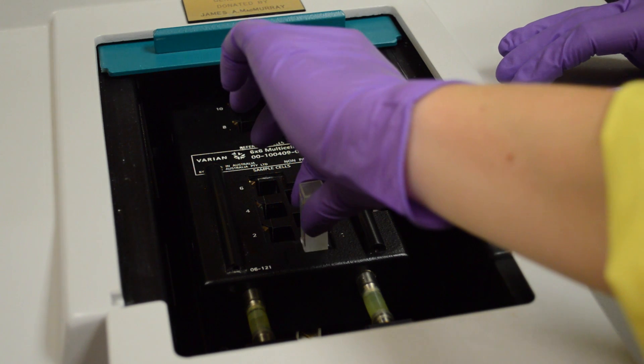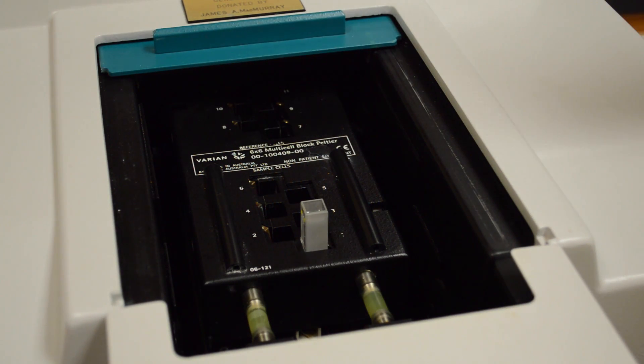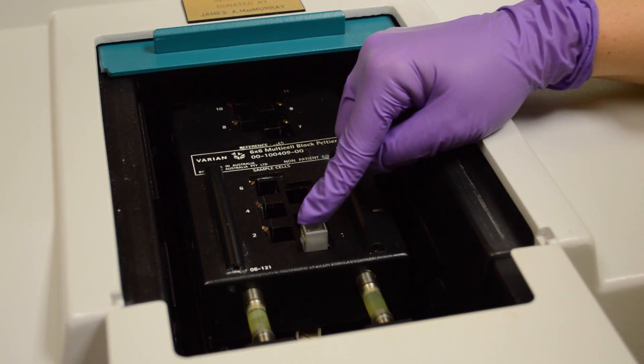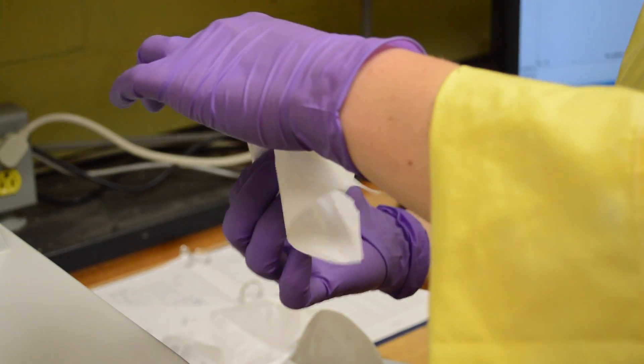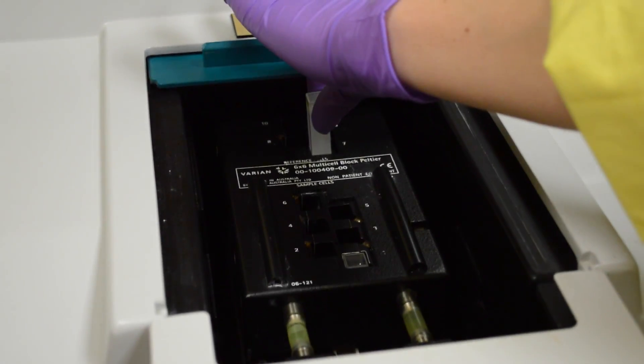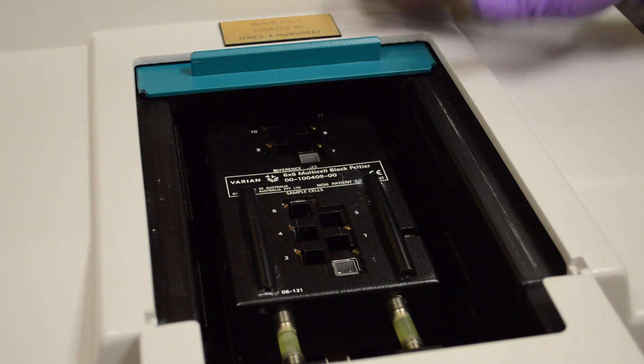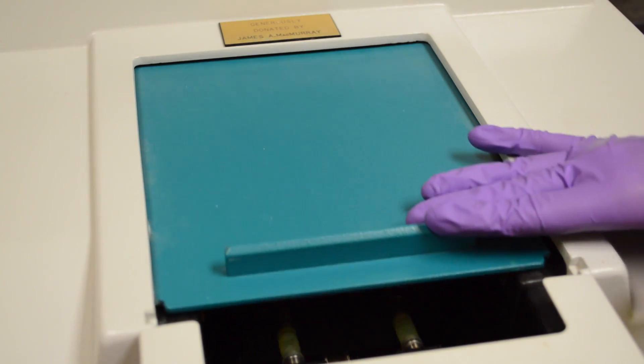You're going to put the cuvette into the spectrometer with the clear sides facing horizontally and you're going to put one in number one and push it down all the way. You're going to put the second cuvette in number seven and push it all the way down. Then from here we just close the lid on the UV-vis spectrometer.